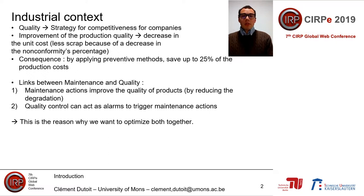For the industrial context, quality has become an important strategy for competitiveness for companies, because the improvement of production quality decreases the unit cost as there are fewer scraps and the non-conformity percentage decreases. By applying preventive methods we can save a huge part of the production cost. We also have a double link between maintenance and quality: maintenance actions improve the quality of production, and quality control can act as an alarm to trigger maintenance actions. This is why we want to optimize both together.